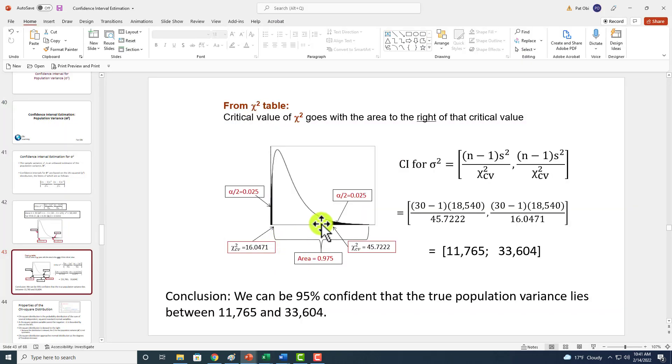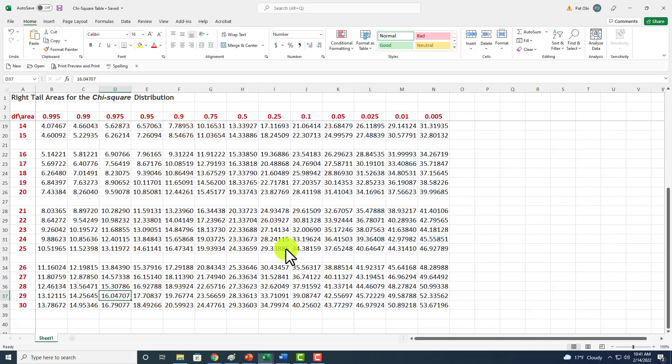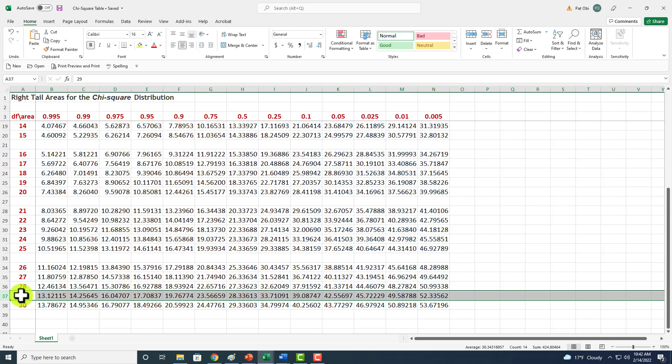Likewise, for this upper critical value, we're going to be searching for that chi-square value corresponding to the area of 0.025 to the right of it, which is this shaded region. Back to the chi-square table, that's our 29 degrees of freedom, and then we search out 0.025 area. The critical value comes out to be 45.72.